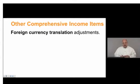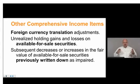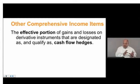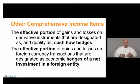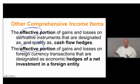Also included are unrealized holding gains and losses on available-for-sale securities, and subsequent decreases or increases in the fair value of available-for-sale securities previously written down. Additionally, the effective portion of gains and losses on derivative instruments designated as cash flow hedges, and the effective portion of gains and losses on foreign currency transactions designated as economic hedges of a net investment in a foreign entity. The key word is 'effective portion' — the ineffective portion goes to the income statement, while the effective portion goes to other comprehensive income.